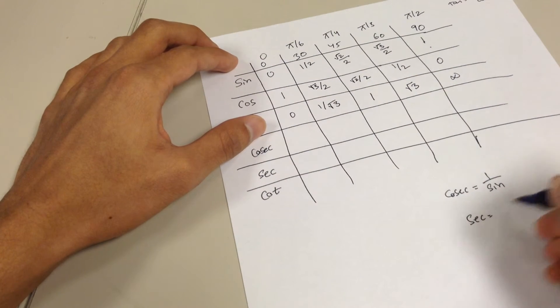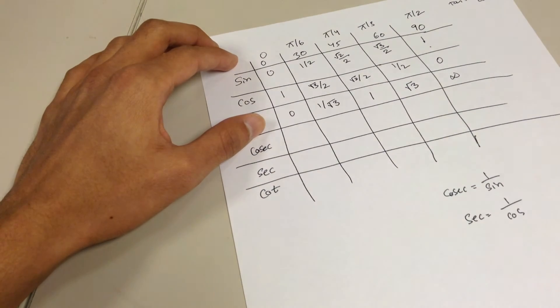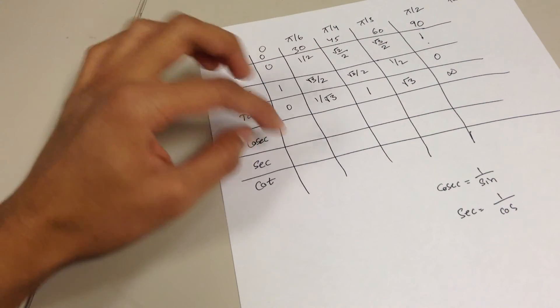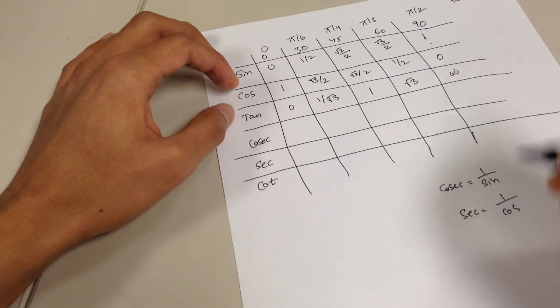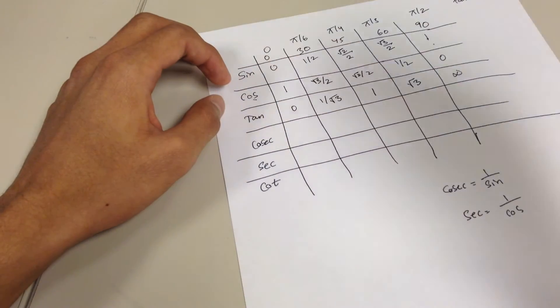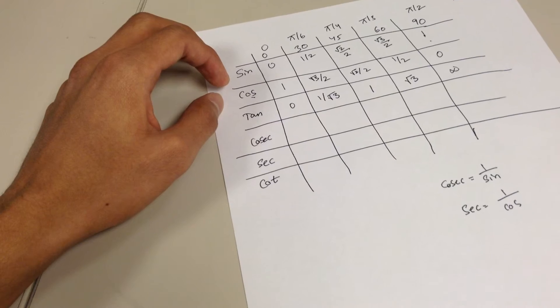Secant. Secant is going to be the same as one over cosine. So do it again for secant. You can either do one over cosine, or you can just reverse the cosecant row and then put it in the secant row, just how we did it for cosine. It's as simple as that. And then cotangent is,